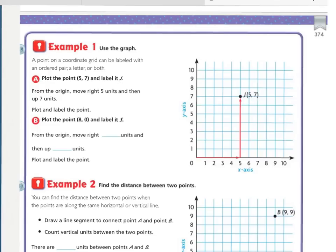Looking at example 1, a point on a coordinate grid, this is a coordinate grid where it kind of looks like graph paper, can be labeled with an ordered pair, a letter, or both. A. Plot the point, that just means to put the point on the grid, 5, 7, and label it J. From the origin, 0, 0, move right 5 units, because that's our 5, we always go horizontal first, we go left to right, and then we go up and down.